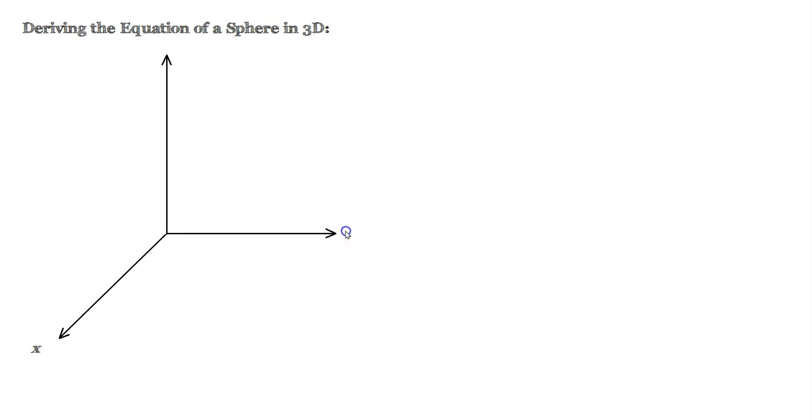Remember, this here is called the x-axis, this is called the y-axis, and that up there is called the z-axis. So we have x, y, z—three-dimensional space.